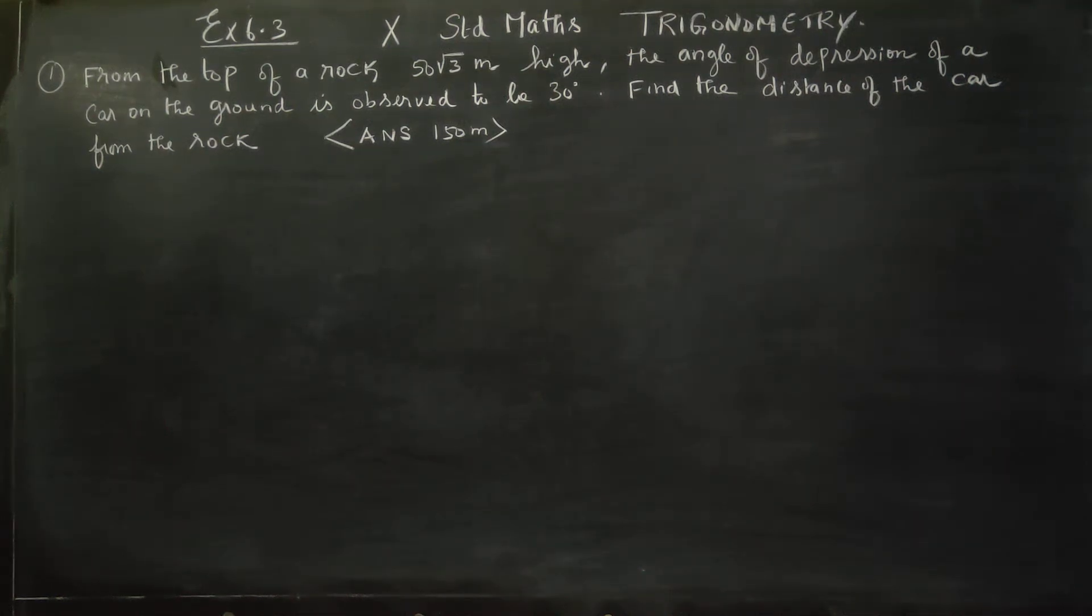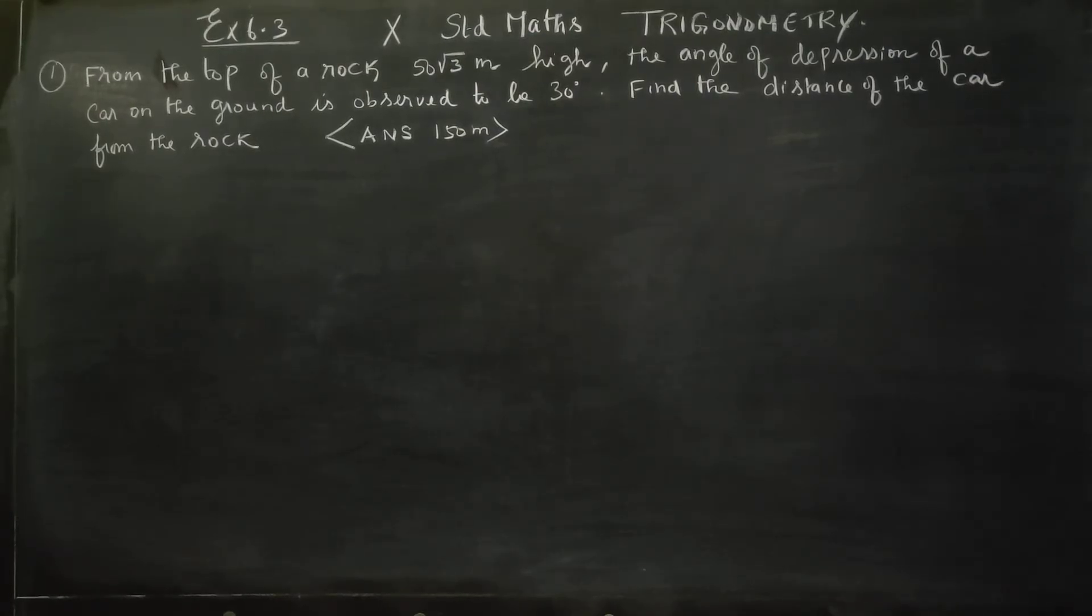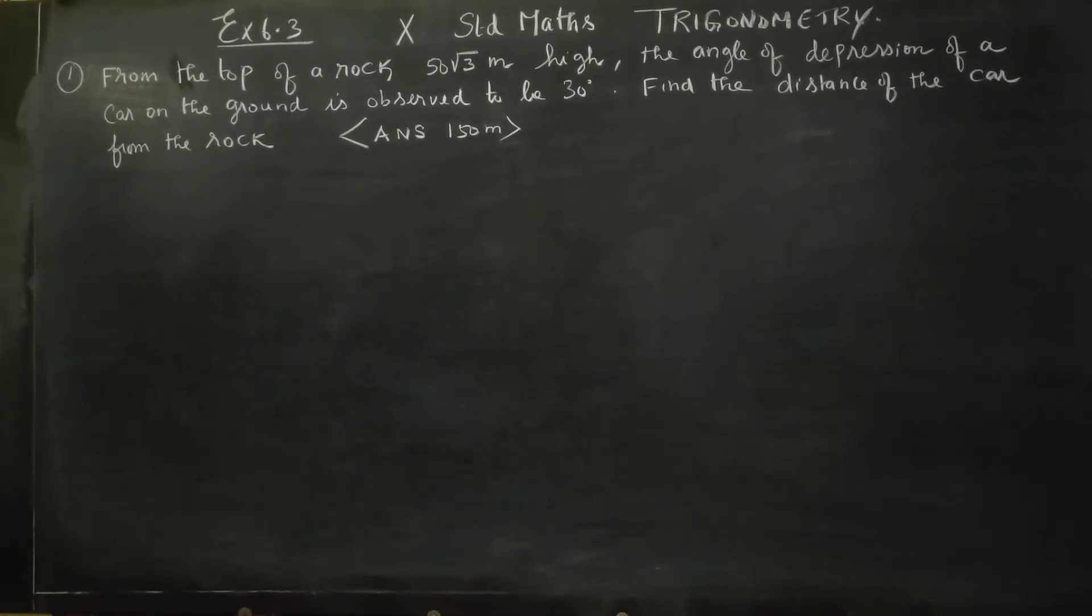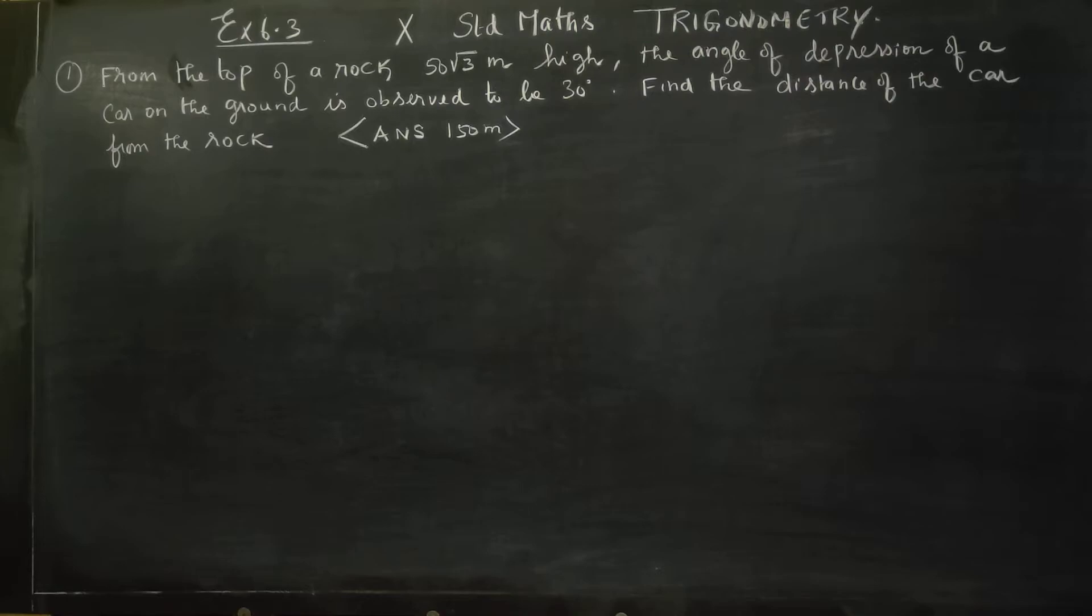Hello 10th standard students, in Exercise number 6.3 on trigonometry, from the top of a rock of 50 root 3 meters high, the angle of depression of a car on the ground is observed to be 30 degrees. Find the distance of the car from the rock.